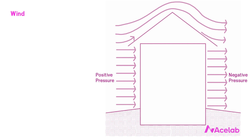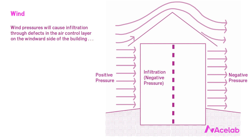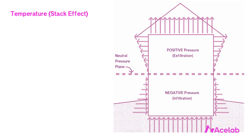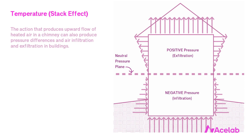With respect to wind, we'll see positive pressures on the windward side of the building and negative pressures on the leeward side. Wind pressures will cause infiltration through defects in the air control layer on the windward side and exfiltration through defects on the leeward side. Temperature will also induce pressure differences in buildings. The action that produces the upward flow of heated air in a chimney can also produce pressure differences and air infiltration and exfiltration in buildings. The concept of warm air rising is a pretty helpful simplification of what's going on.